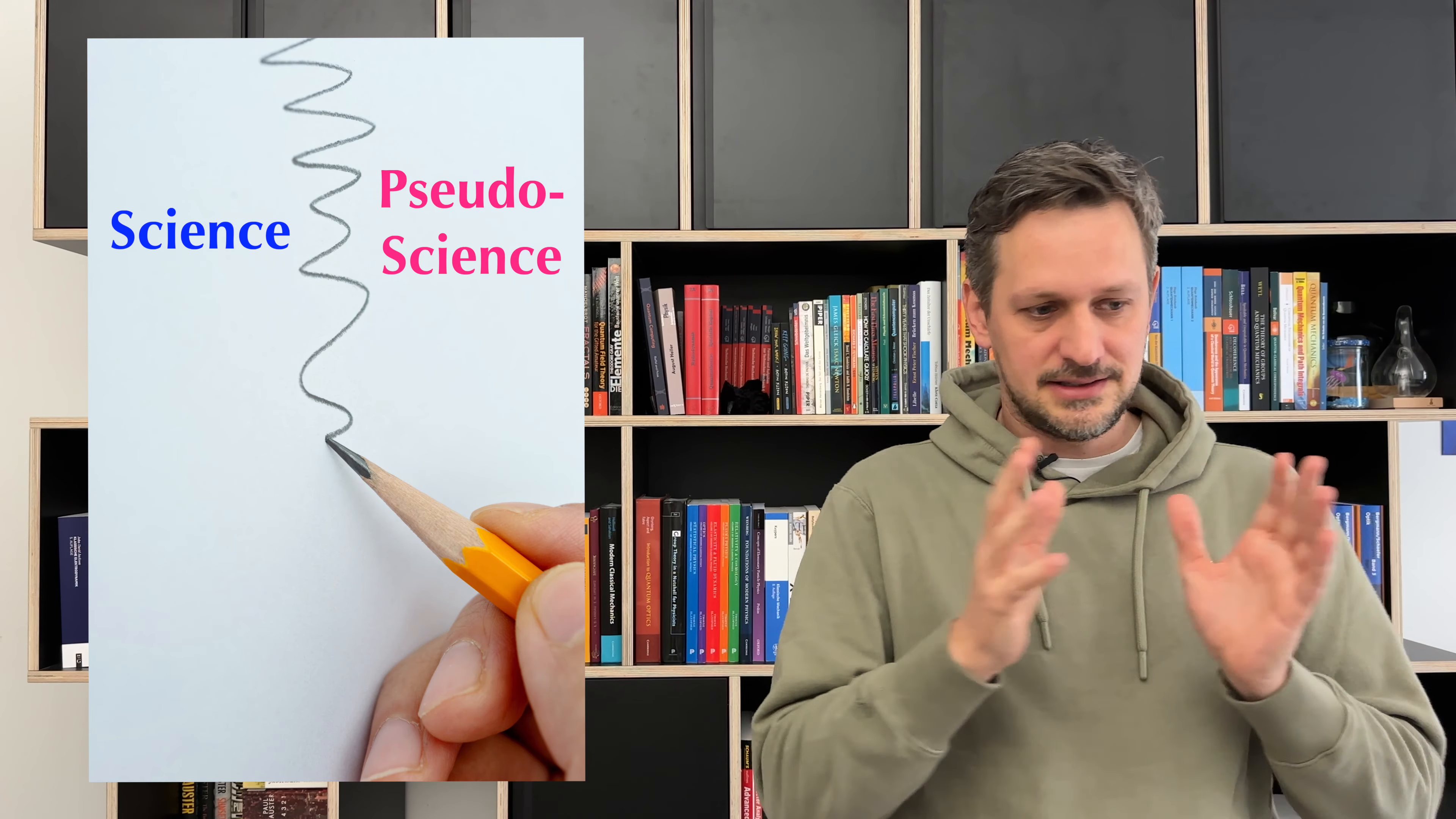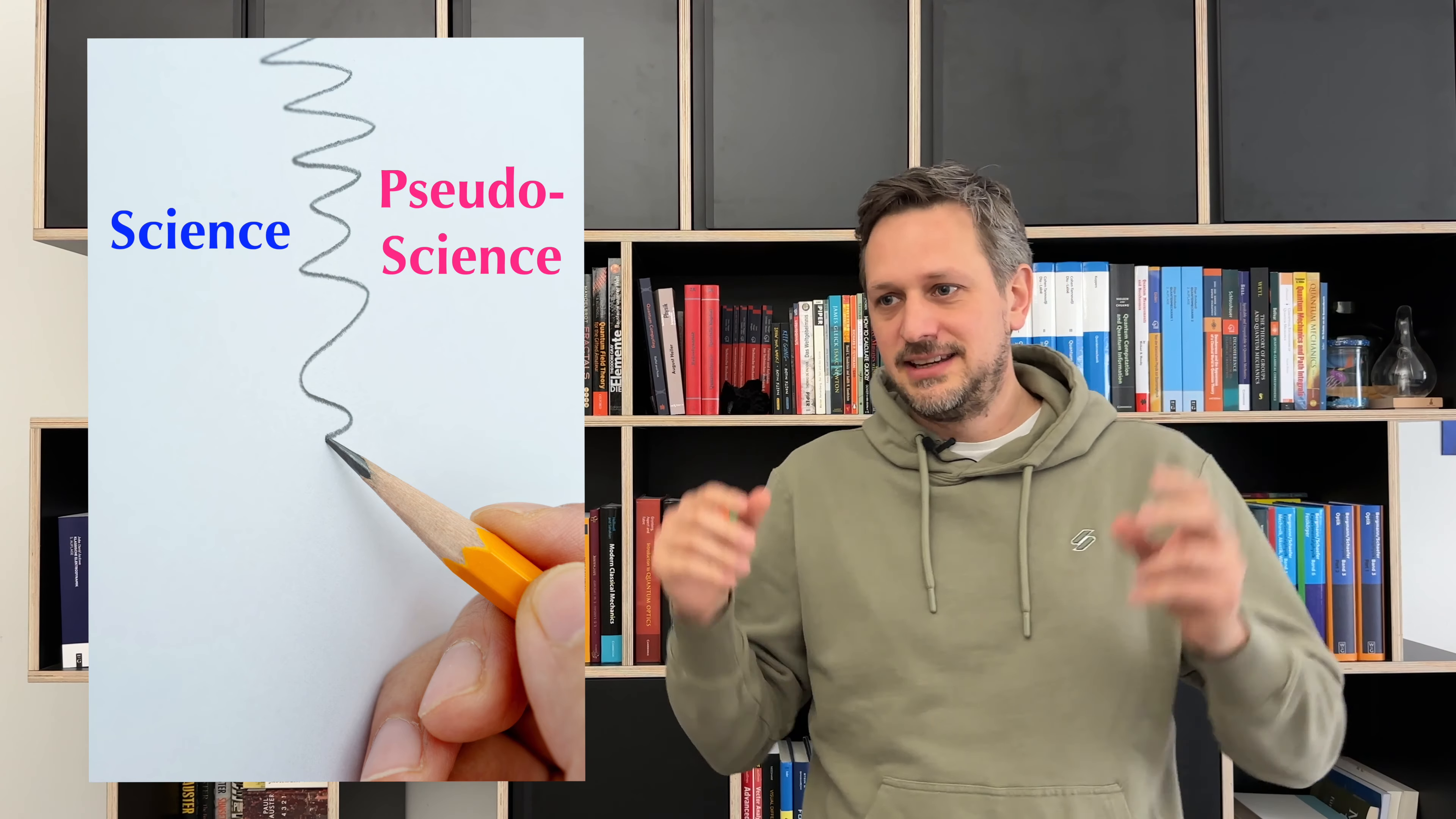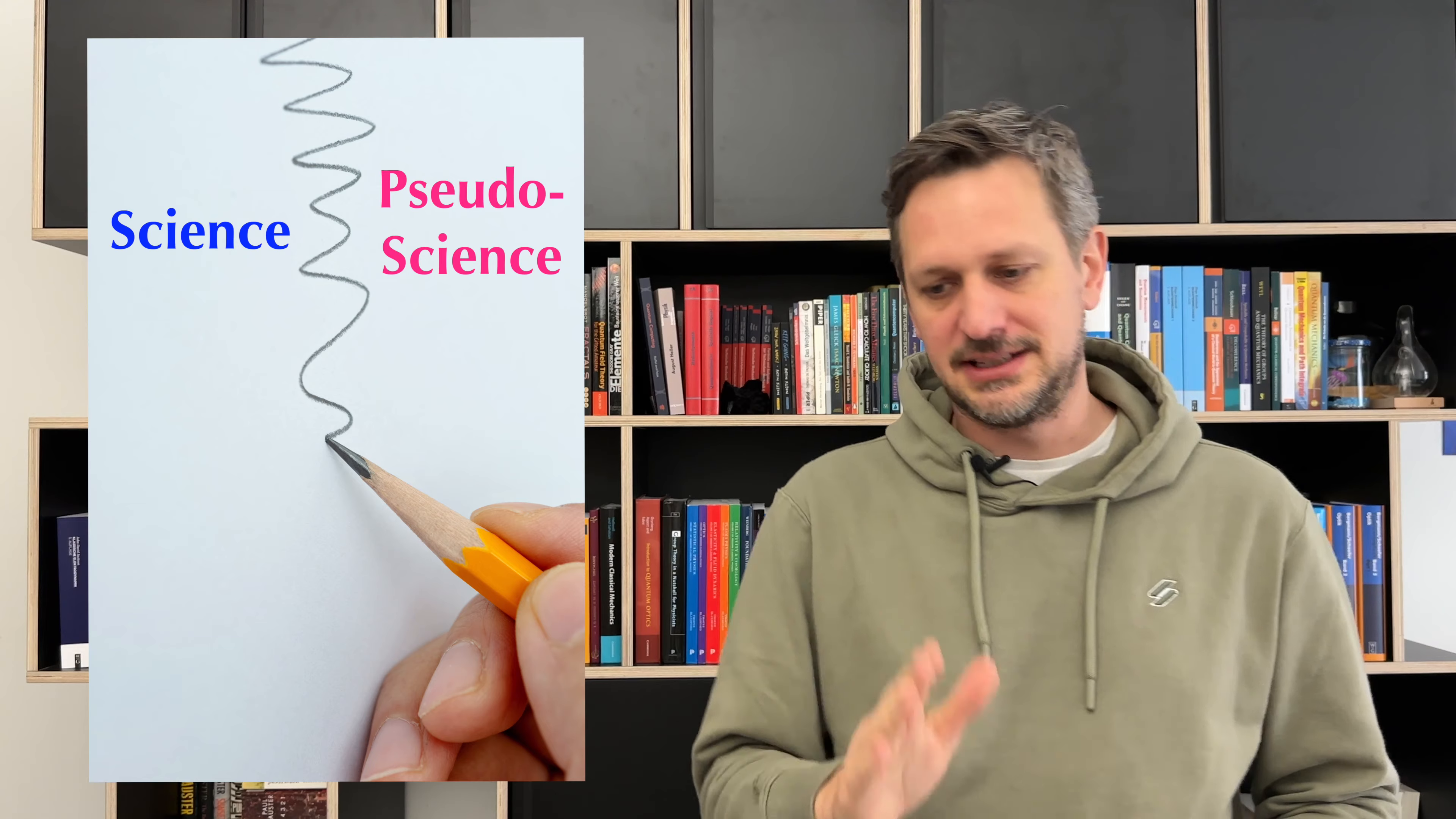And the second point is even worse, because the conclusion is: if you cannot draw a clear line between science and pseudoscience, neither really exists. Under this logic, nothing in reality would exist, because it's never simple.